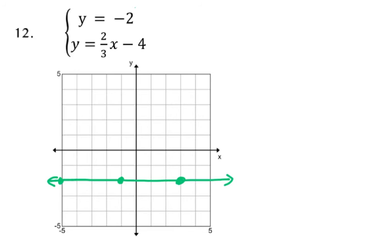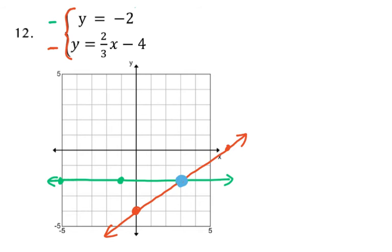Now let's look at the second equation: y equals two-thirds x minus 4. So we go down to negative 4 for the y-intercept, then go up 2 and over 3 repeatedly to make that line. Every point on the red line is a solution to that second equation. The question is: as a system, what is the solution? I'm looking for where they're the same at the same time. There they intersect, and that ordered pair is (3, -2). That means if you plug in 3 for x and -2 for y, it will work in both equations.